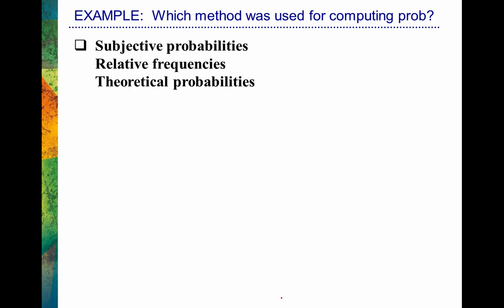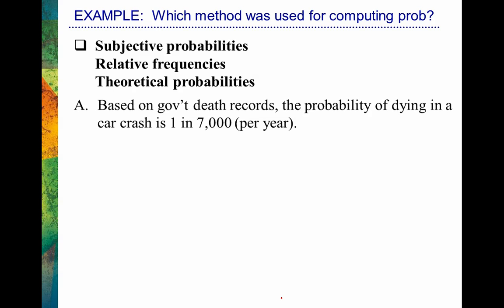Let's make sure we can distinguish between subjective, relative, and theoretical probabilities. Here are some examples. Based on government death records, the probability of dying in a car crash is 1 in 7,000 per year. What kind of probability would that be? That would be a relative probability, because we're talking about based on death records — we're actually looking at the death records and figuring out how many people are dying in car crashes per year. The key thing is we're looking at records — actual data.